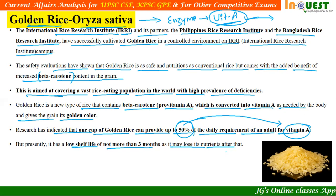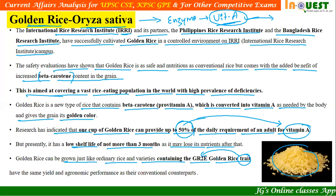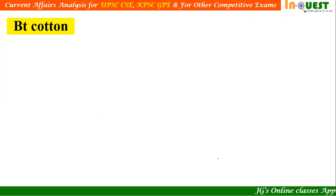Presently, golden rice has a low shelf life of not more than three months, as it may lose its nutritional value after that. Golden rice can be grown just like ordinary rice, containing the GR2E golden rice trait, with the same yield and agronomic performance as conventional counterparts.